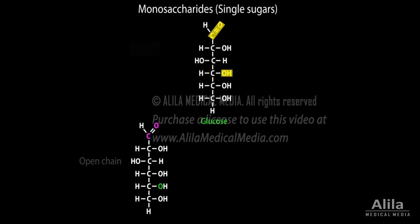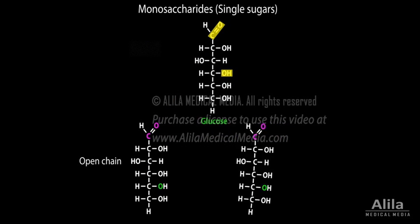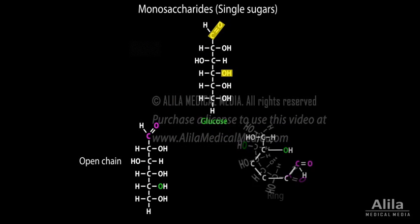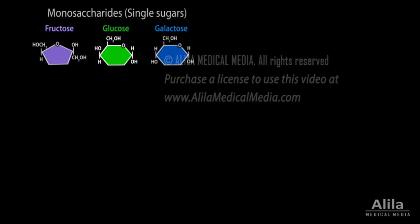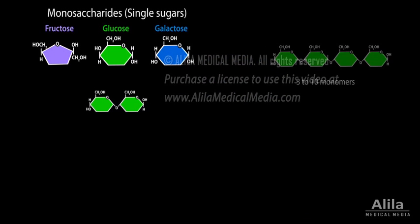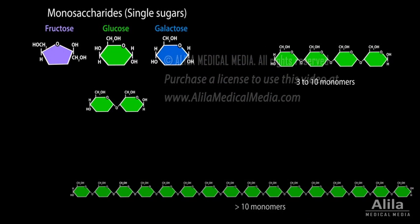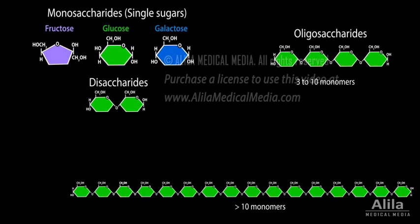Monosaccharides exist in open chain form and closed ring form. The ring forms can connect to each other to create dimers, oligomers, and polymers, producing disaccharides, oligosaccharides, and polysaccharides, respectively.